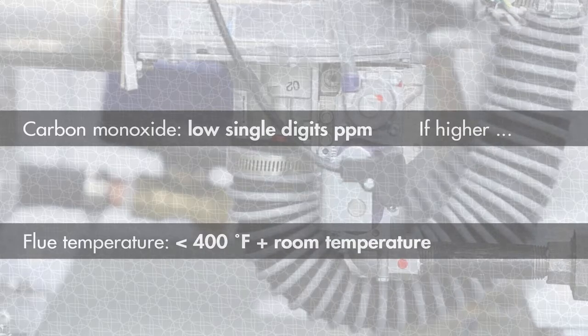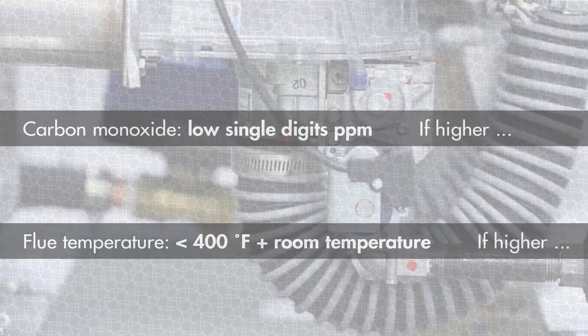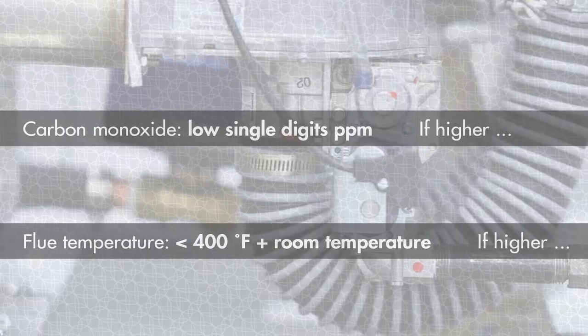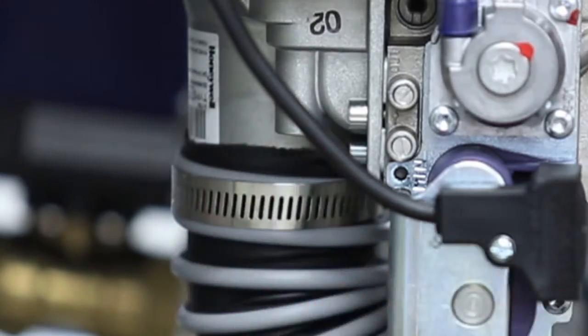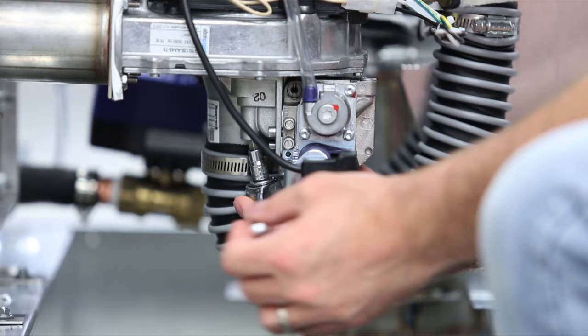If the carbon monoxide level is higher than single digits, or if the flue temperature is higher than 400 degrees Fahrenheit plus room temperature, remove the cap from the throttle screw housing and turn the throttle screw clockwise one-fourth turn.